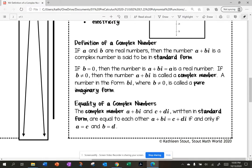The definition of a complex number is if A and B are real numbers, then the number A plus Bi is a complex number said to be in standard form. So this is big. Standard form is A plus Bi. If B equals zero, then the number A plus Bi is just A, is a real number. If B does not equal zero, then A plus Bi is called a complex number. A number in the form Bi, where B is not equal to zero, is called pure imaginary form. And equality of complex numbers: the complex number A plus Bi and C plus Di written in standard form are equal to each other if and only if A is equal to C and B is equal to D.